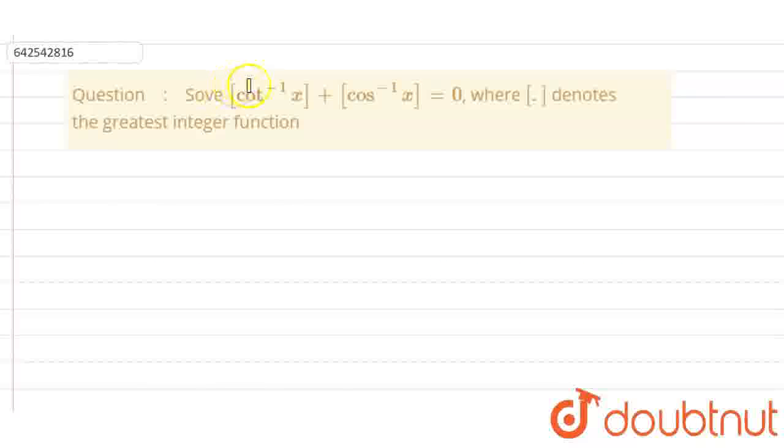Okay guys, let's start this question. Greatest integer of cot inverse x plus greatest integer of cos inverse x is equal to 0. We have to find at what x this belongs.